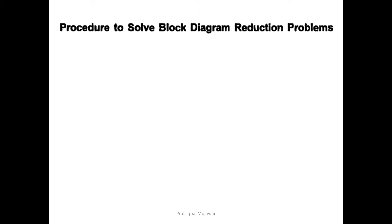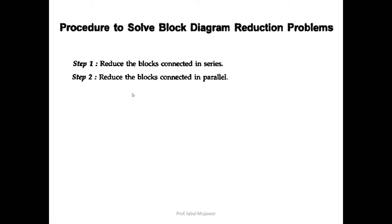Let's revise the procedure. Step number one: reduce the blocks connected in series. Step number two: reduce the blocks connected in parallel. We can reverse the order — we can use step two first and then step one. It will not affect the procedure of solving the block diagram. Any one rule we can use first; they are not a strict thumb rule. We can use parallel first, then series.